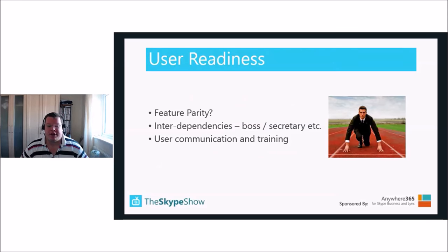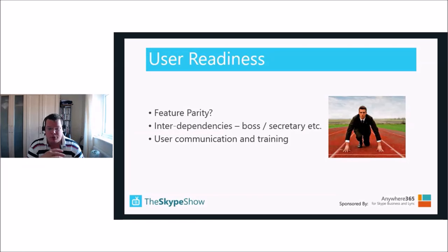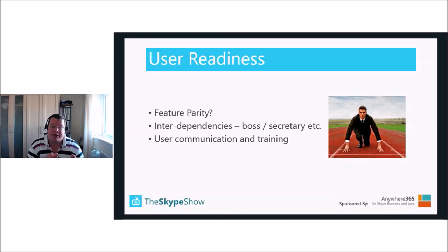In terms of user readiness, we focus on the user's features — their DID information, extension, whether we need to normalize numbers, and voicemail services. We build a map of consumed features on the legacy world and a feature matrix based on the native functionality of Skype for Business to see whether we can achieve feature parity between the user's legacy features and what's available in Skype for Business.